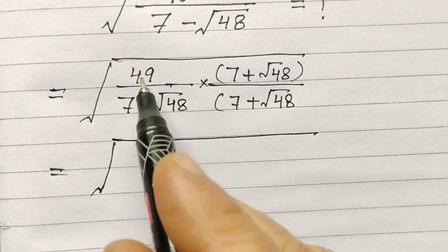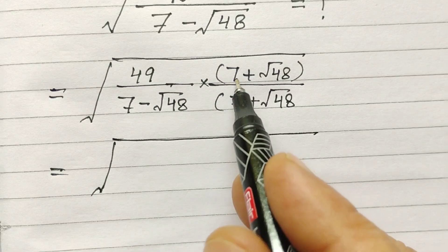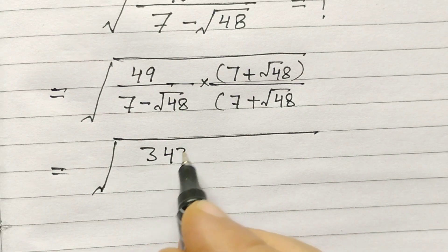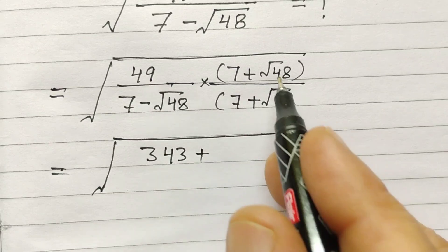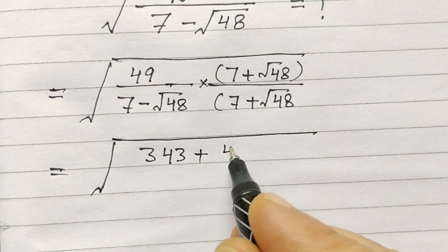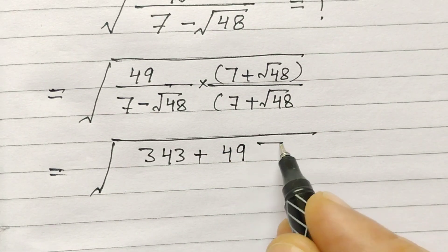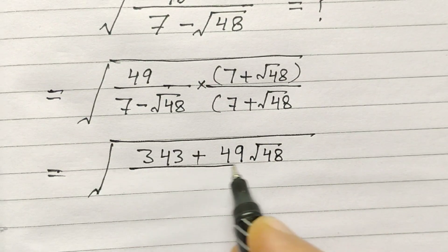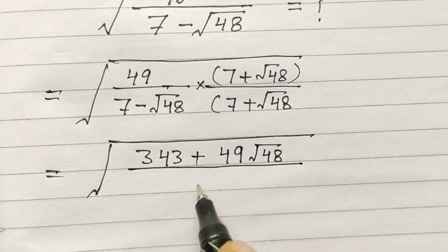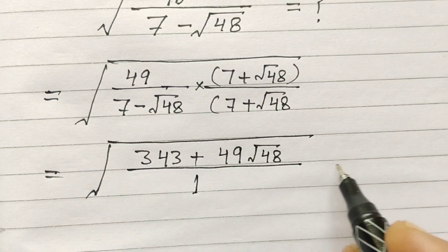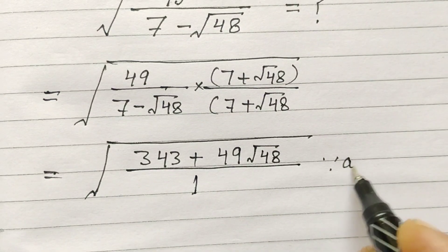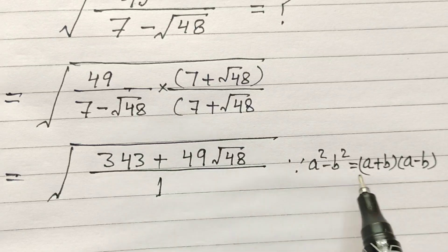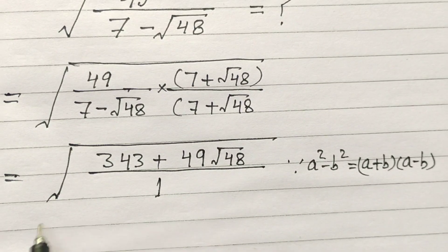Now, 49 multiplied by 7 is 343, plus 49 times square root of 48, all over the denominator. Because we apply the a squared minus b squared formula here.